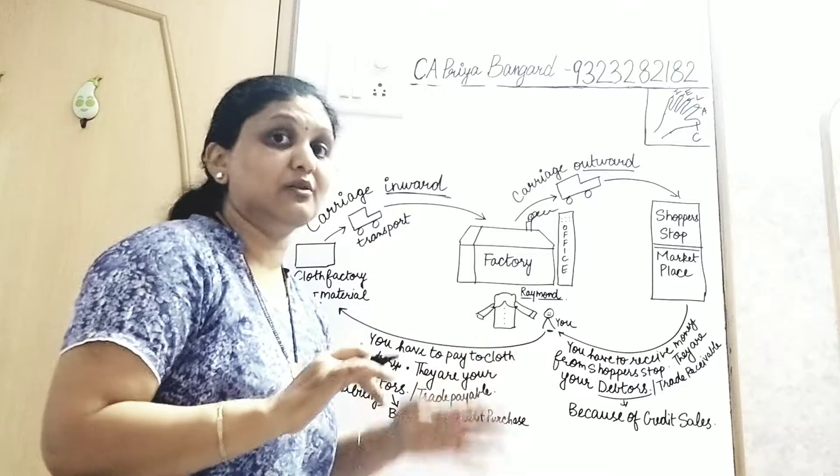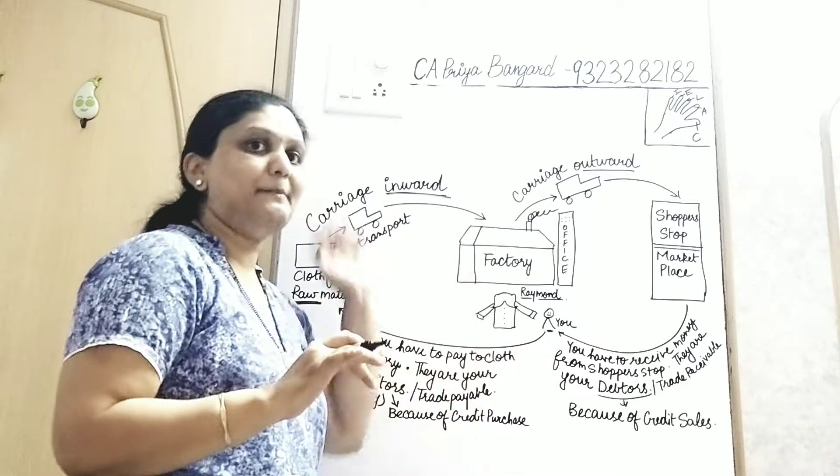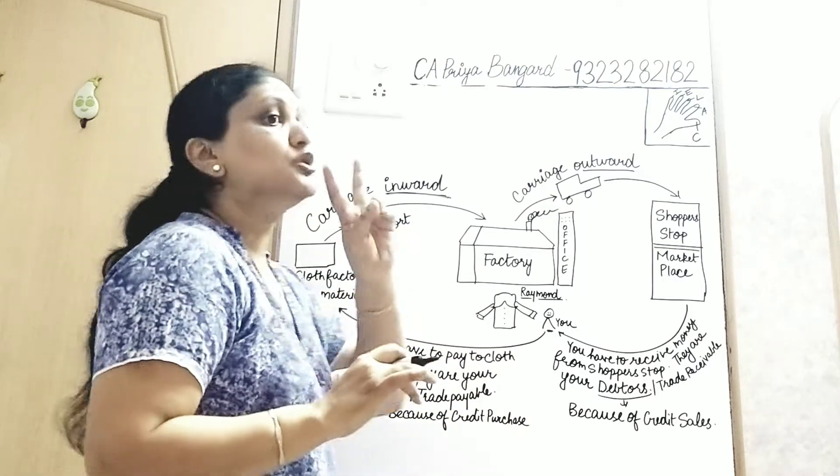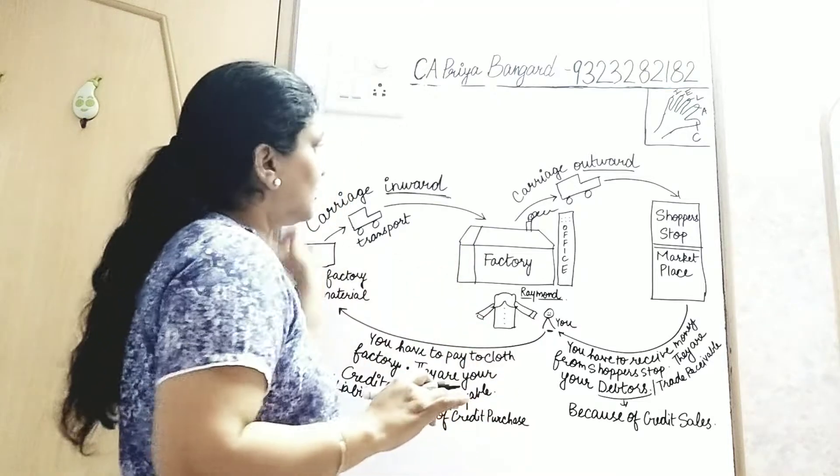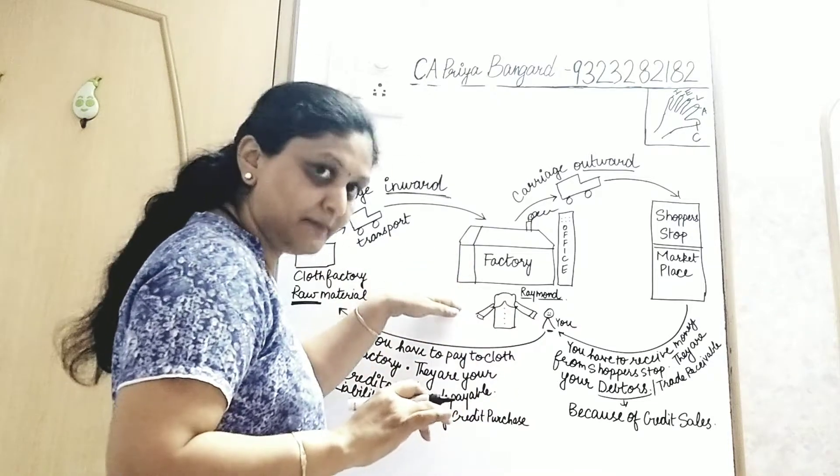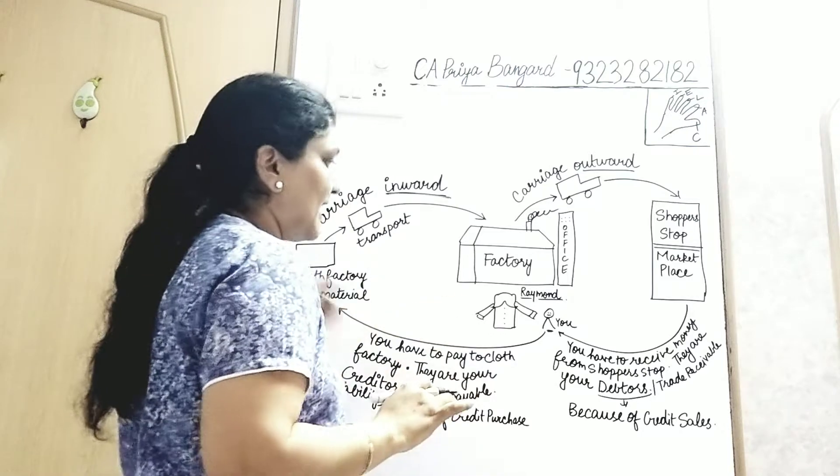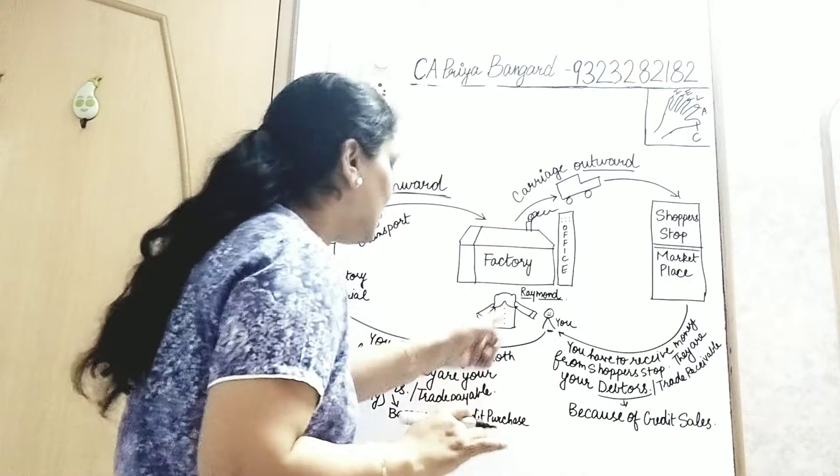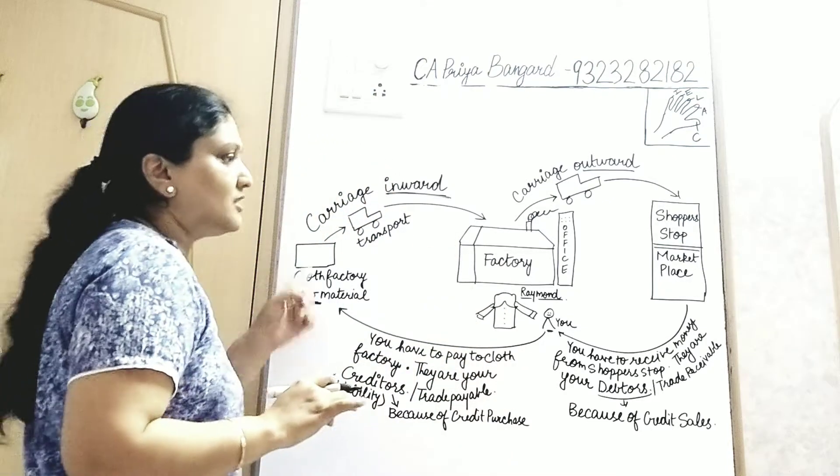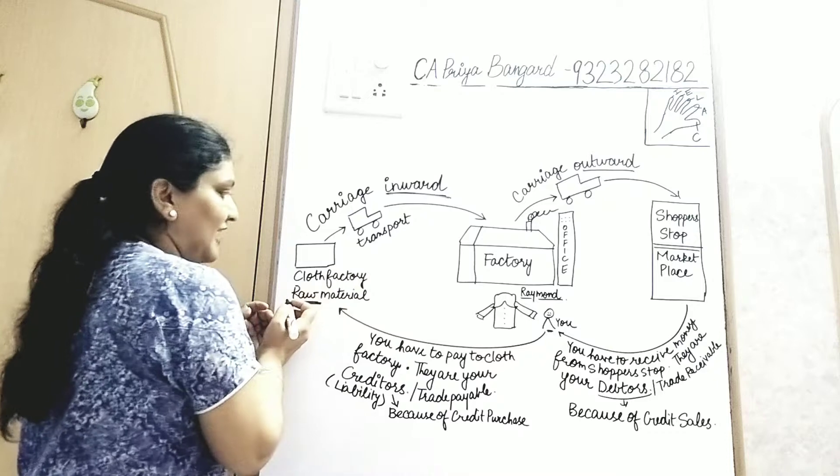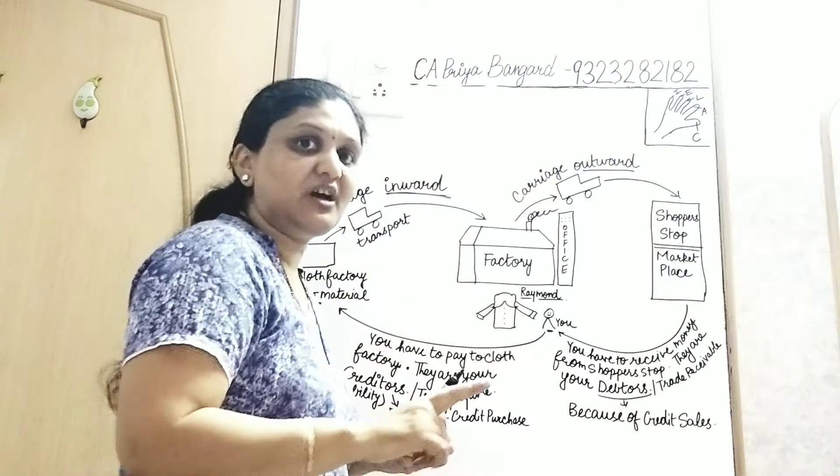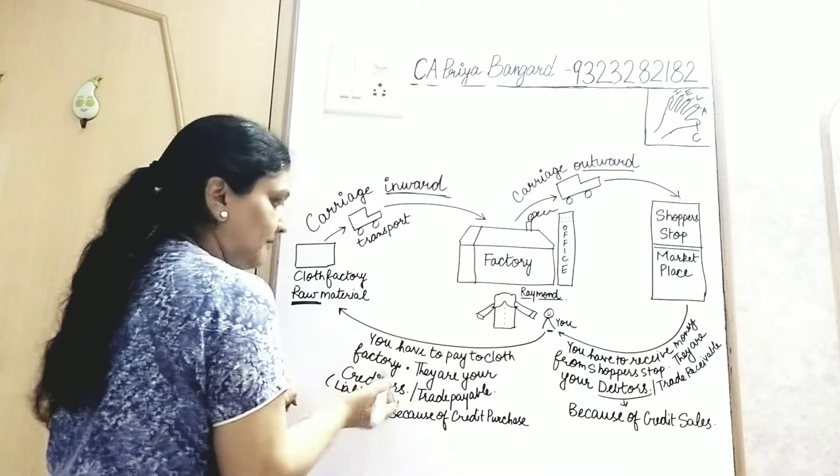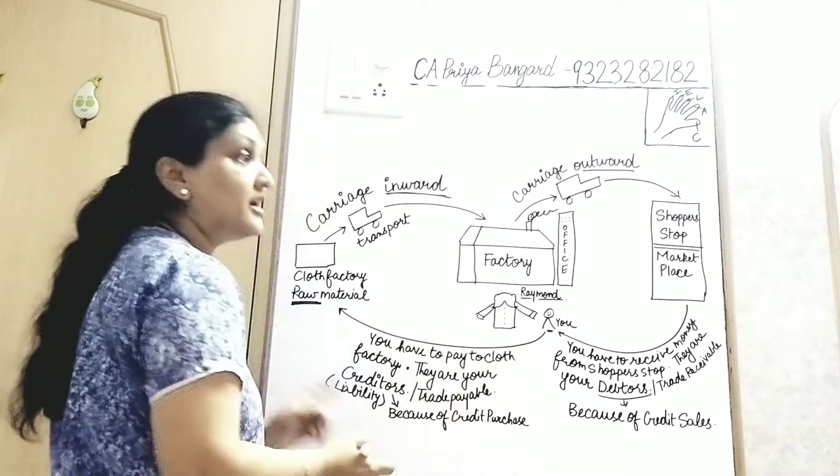Credit, that is you are buying now but will pay later. Say that the cloth factory gave you 2 months to pay. So you took the cloth, but you will be paying for the cloth - say for example, the cloth is for 1 lakh rupees. You will be paying the cloth factory owner after a month, so you have to pay to the cloth factory. They are your creditors.